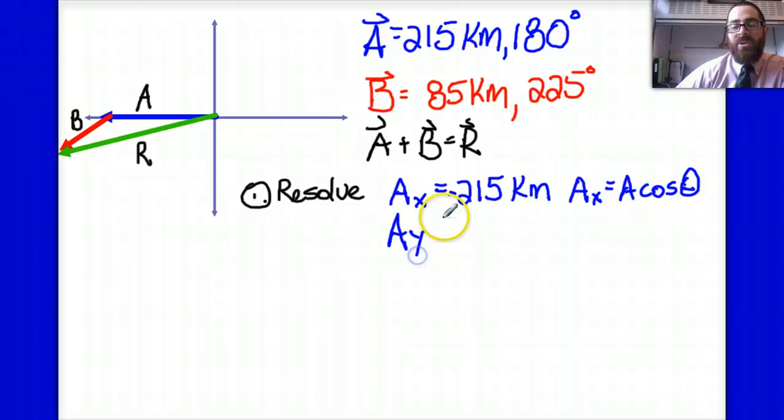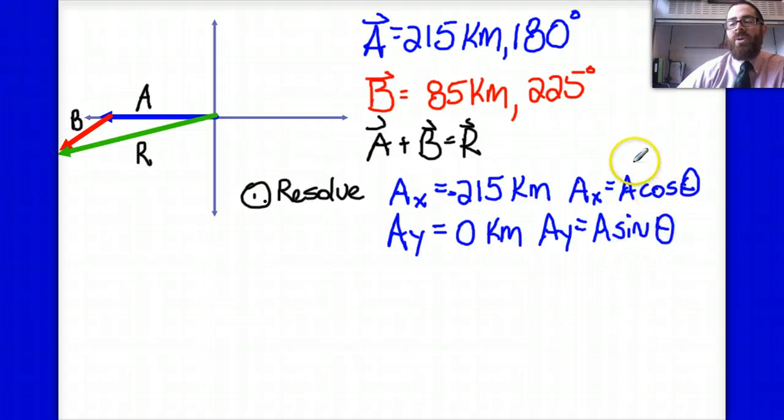Kind of in a similar vein, the y component of vector A is going to be zero kilometers. None of that vector is going up and down. And again, if I wanted to use my traditional trigonometric relationship, I could say that the y component is A times the sine of theta. And so therefore I'd plug in 215 times the sine of 180, which is zero yielding zero.